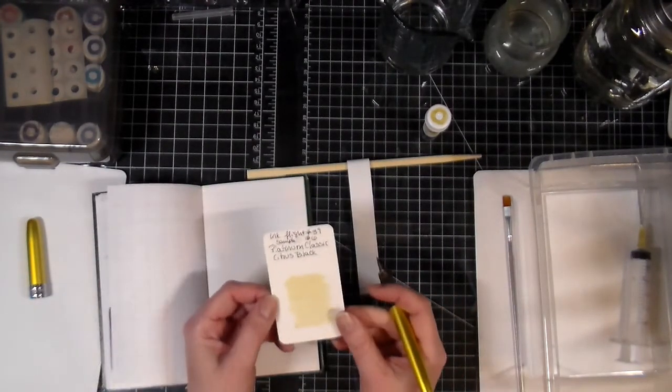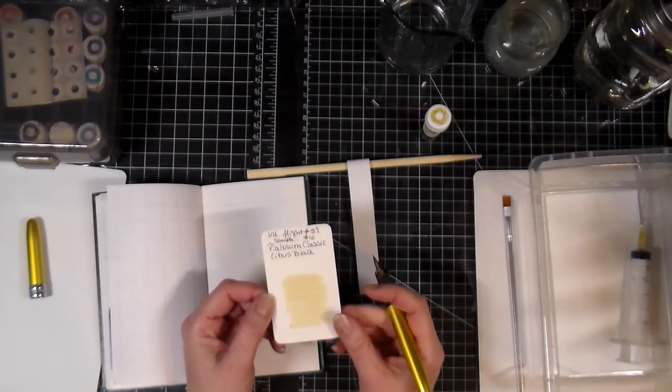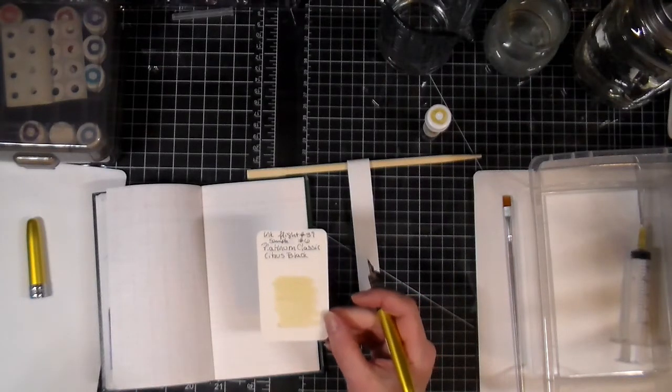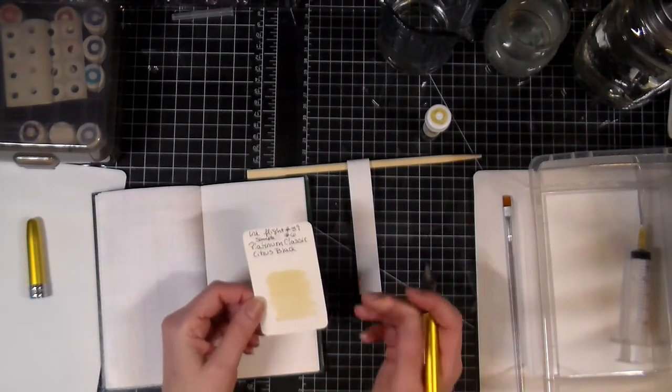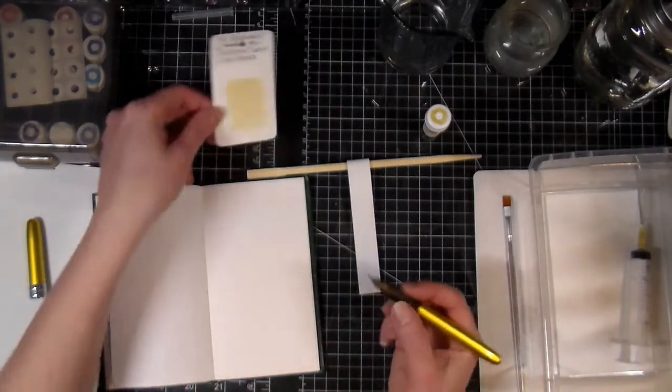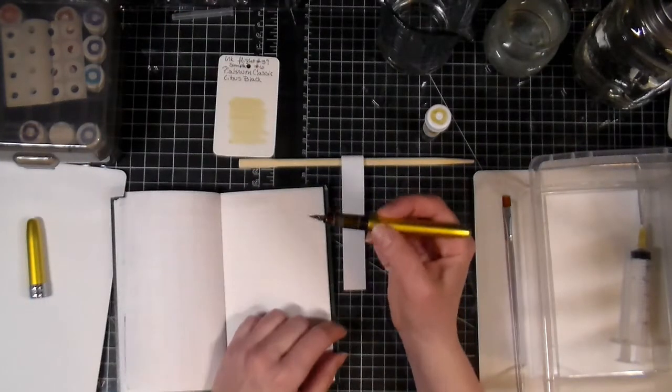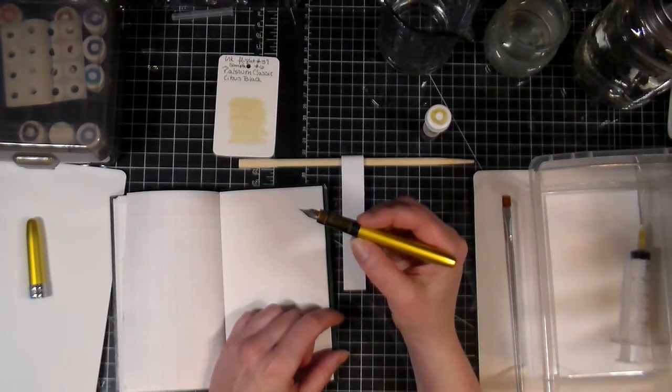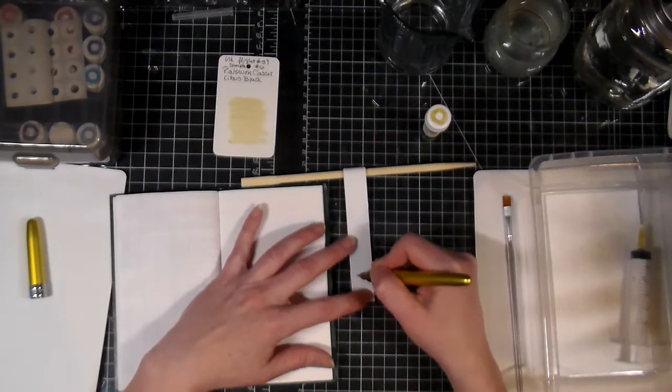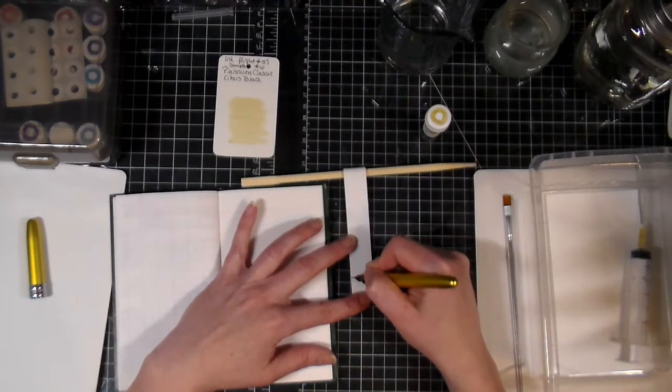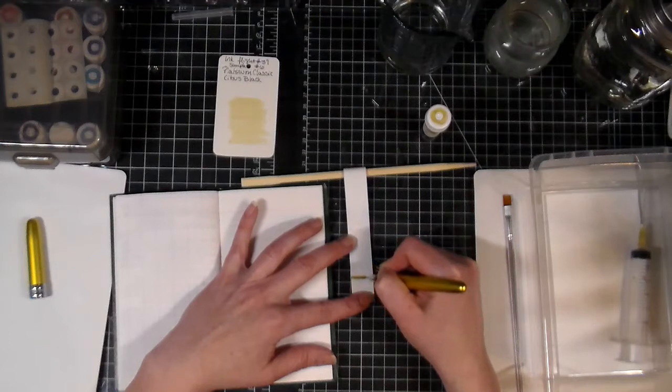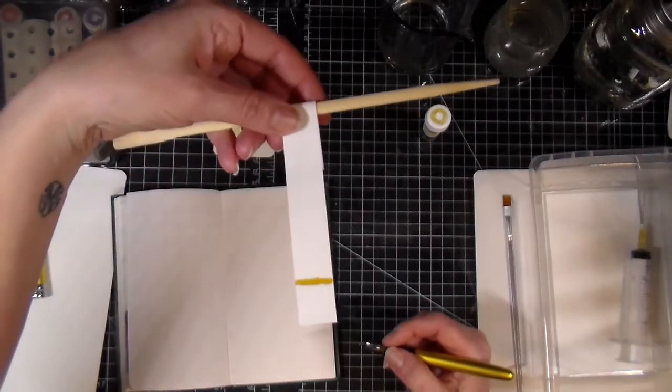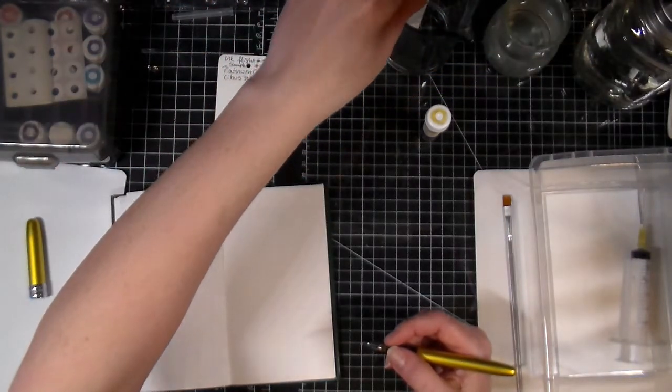So this time we're again using the flight ink flight number 39 of April 2020 and it's sample number 6 which is Platinum Classic Citrus Black. And I thought that the perfect pen for this would be my Platinum Plesi Bally Citrus Special Edition. So we're using that pen. That's probably one of the inks that I really don't see much use for because it's so pale. But we shall see how it writes.